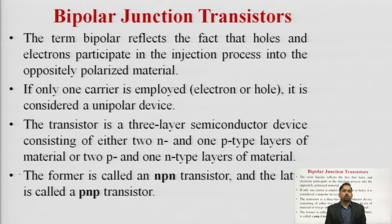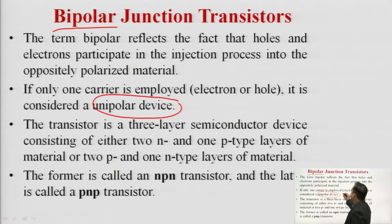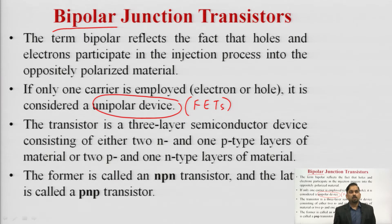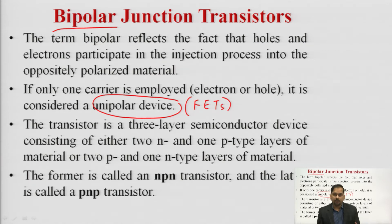Welcome to the course on Emerging Domain Electronics Engineering. This is lecture 10, and in this lecture we will see the bipolar junction transistor. The term 'bipolar' stands for the contribution of both holes and electrons. Comparing with unipolar devices — MOSFETs or FETs are unipolar — in BJTs both holes and electrons are responsible in the injection process, whereas in unipolar devices either electrons or holes contribute to the current.